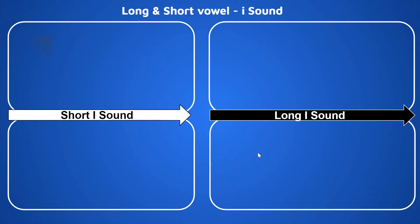Today we are going to learn the short and long sound of alphabet I. What is the short sound of alphabet I? That is the phonic sound. The phonic sound of alphabet I is E. The long sound of alphabet I is I — that is the alphabetic sound. So short sound means phonic sound, which is E. Long sound means alphabetic sound, which is I.